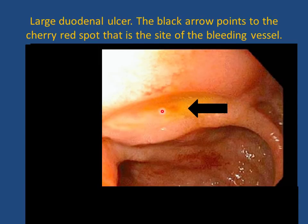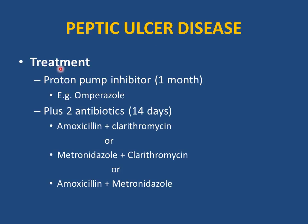A duodenal ulcer on endoscopy shows a cherry-red spot indicating the bleeding vessel. Treatment of peptic ulcer disease: PPI for one month plus two antibiotics for 14 days. Recommended antibiotic combinations are: amoxicillin twice daily plus clarithromycin twice daily; or metronidazole twice daily plus clarithromycin twice daily; or amoxicillin twice daily plus metronidazole twice daily.